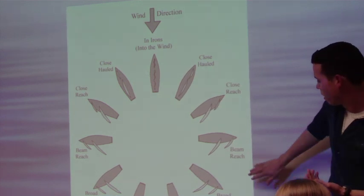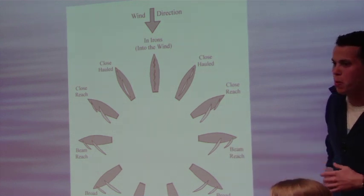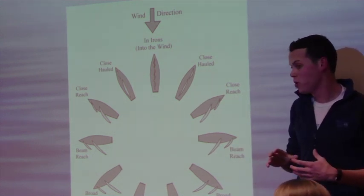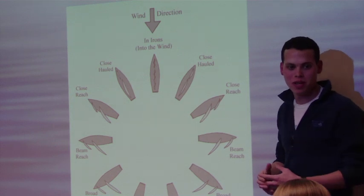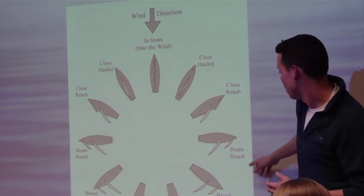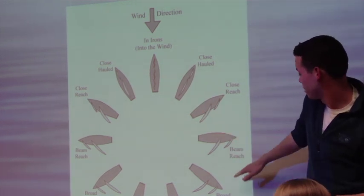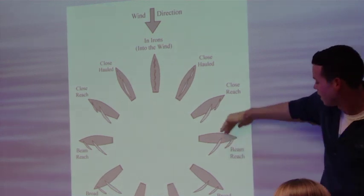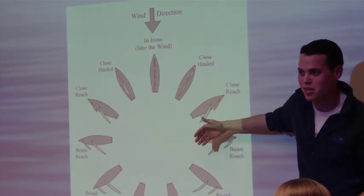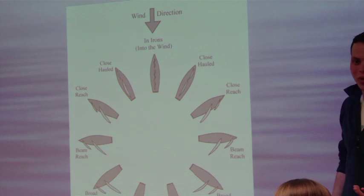Next, we have what we call a beam reach. And a beam reach is where the wind is directly abeam of our boat. So that means it's directly 90 degrees off the bow. So you see the bow here. It's indicating that the wind is hitting directly the side of the boat. So it's a beam reach.